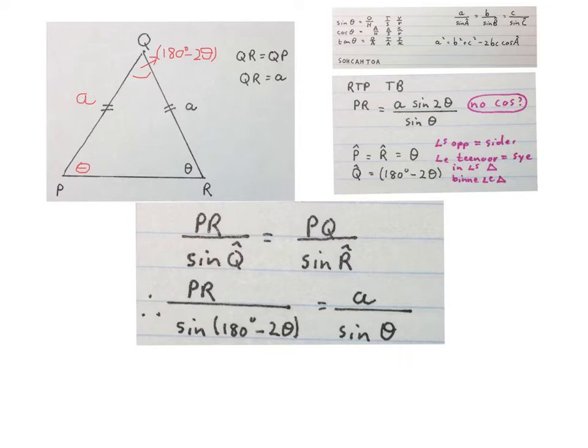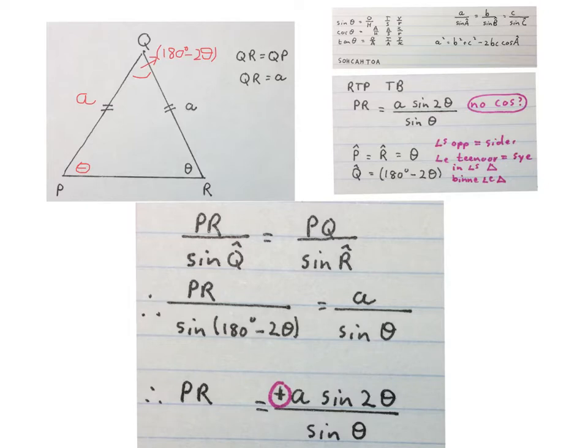Now we do a little bit of algebra. We multiply by sine 180 minus 2 theta on both sides to get the PR alone. Then using reduction we know that sine 180 minus 2 theta will become plus sine 2 theta. And then PR equals this answer they asked us to prove. Please stop the video and get your brain around this.